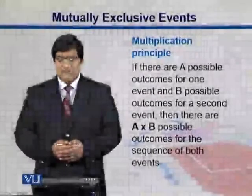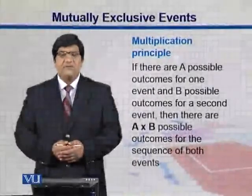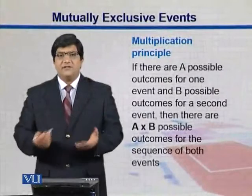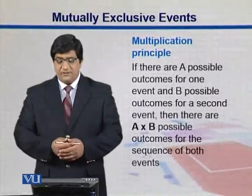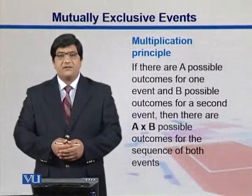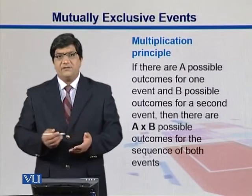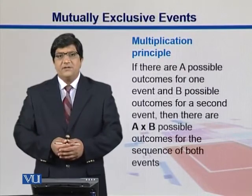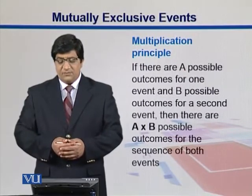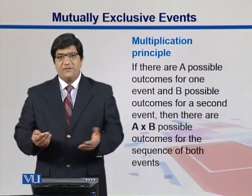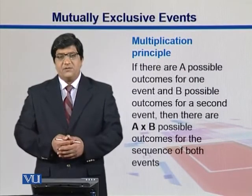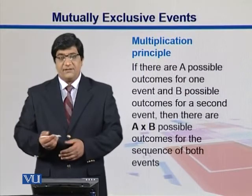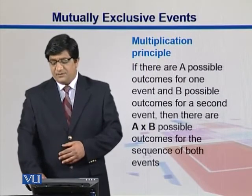If there are A possible outcomes for one event and B possible outcomes for another event, then there are A cross B — that is, the multiplication of their outcomes — that will be the total possible outcomes if they are put together.